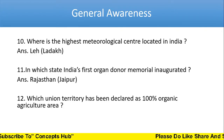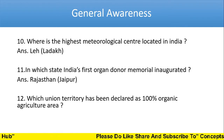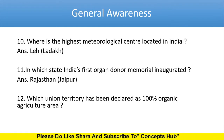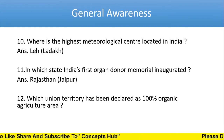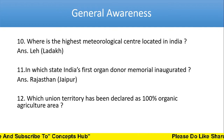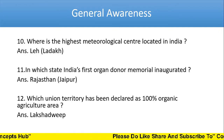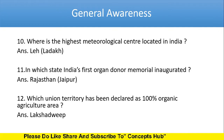Which Union Territory has been declared a 100% organic agriculture area? The answer is Lakshadweep. If they ask you about a state, then the answer is Sikkim.